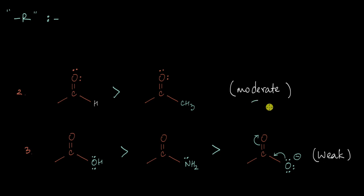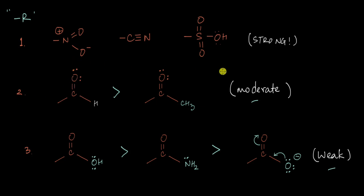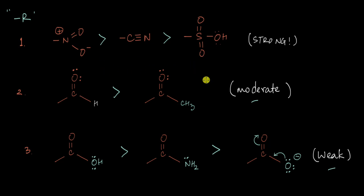The groups we have seen so far are actually moderate to relatively weak -R groups. The strongest -R groups are in fact the nitro group (NO2), the cyano group (CN), and the sulfonic acid group (SO3H). These three groups have very different atoms connected in different numbers, making comparative analysis difficult, but do note that NO2 is one of the strongest -R groups, followed by CN, followed by sulfonic acid — as found experimentally.